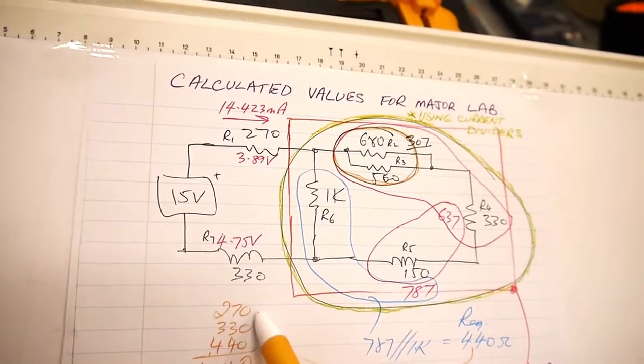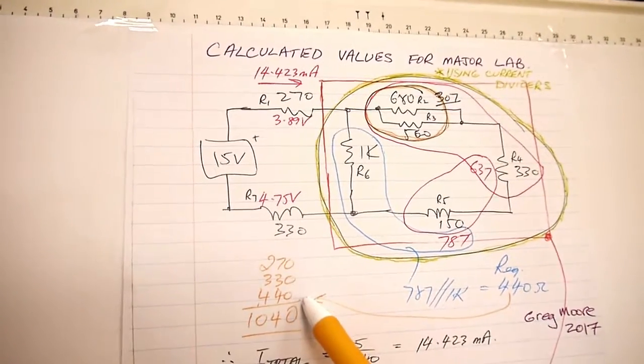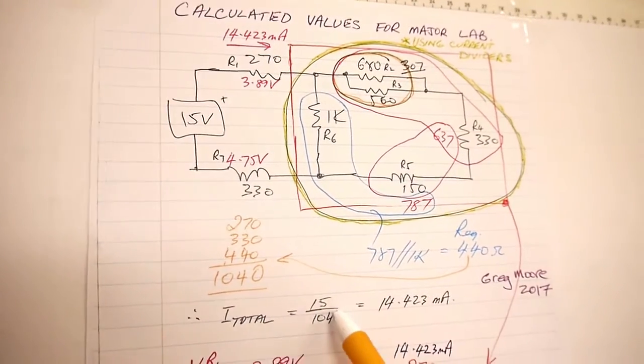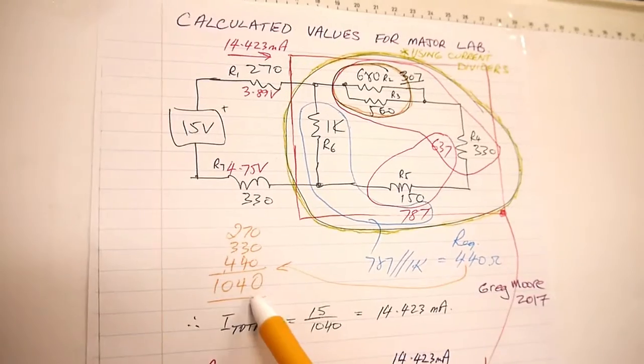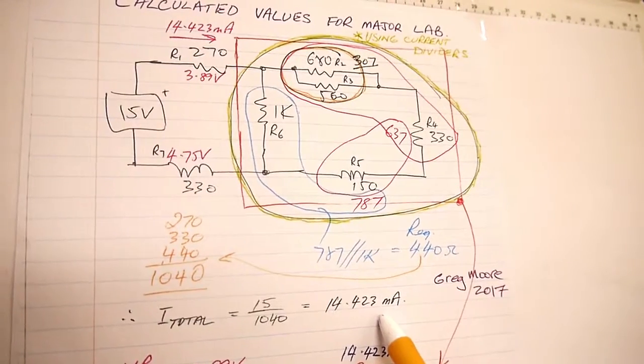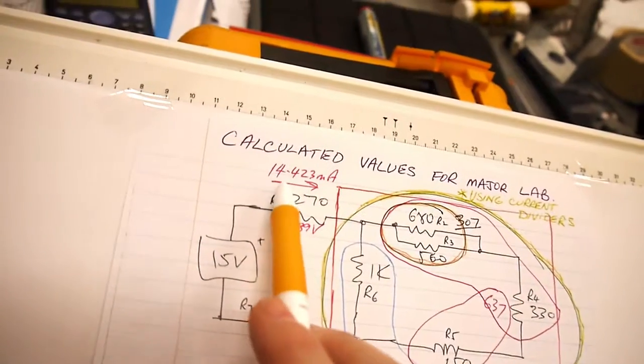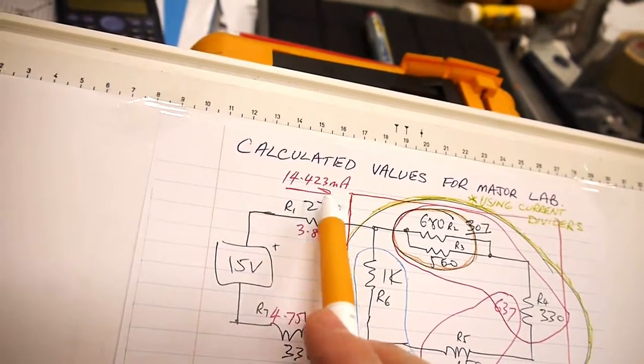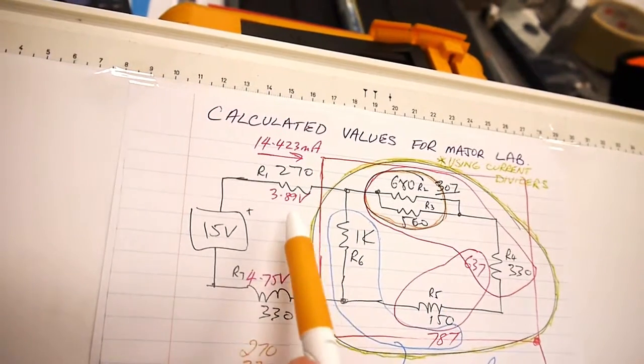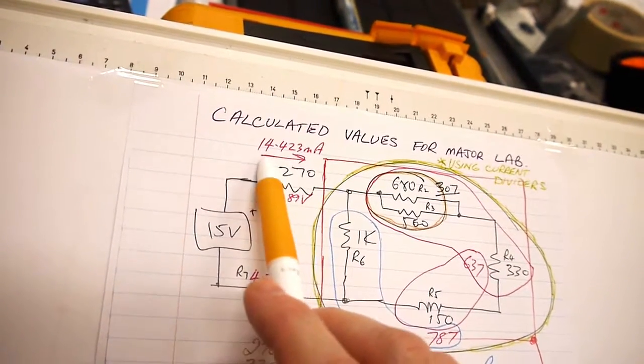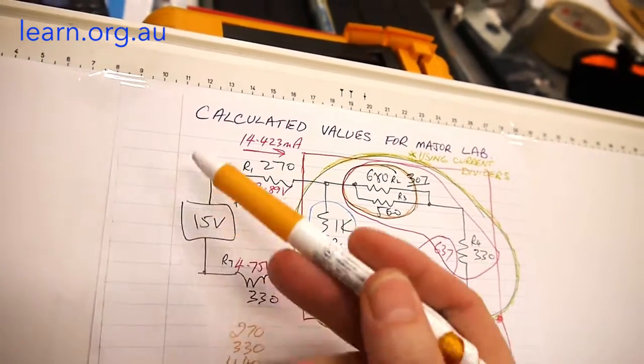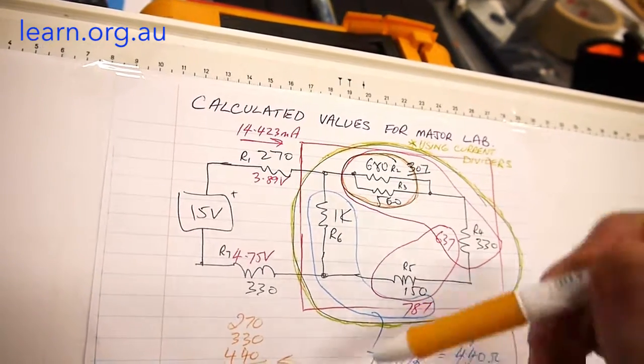I've had to get the 270 ohms, add it to the REQ of this red box, add it to the 330 ohms. 270 plus 330 plus 440 comes to 1040 ohms. I equals V on R, so 15 volts divided by that 1040 gives me 14.423 milliamps of current flowing. I've drawn it on the circuit up there.